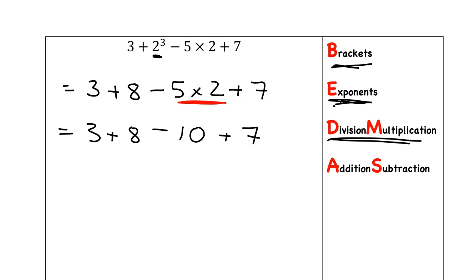And then after that, according to BEDMAS, I must do addition and subtraction. Those are at the same level, addition and subtraction. So if I've only got addition and subtraction left in my calculation, I just work from left to right. So I say 3 plus 8, that gives me 11. 11 minus 10, that gives me 1. And 1 plus 7 gives me my final answer of 8.